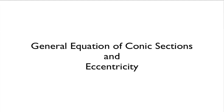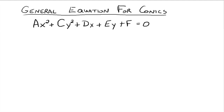In this video we're going to talk about the general equation for conic sections and then end with the eccentricity of conic sections. Here's our general equation for conics: ax squared plus cy squared plus dx plus ey plus f is equal to zero.